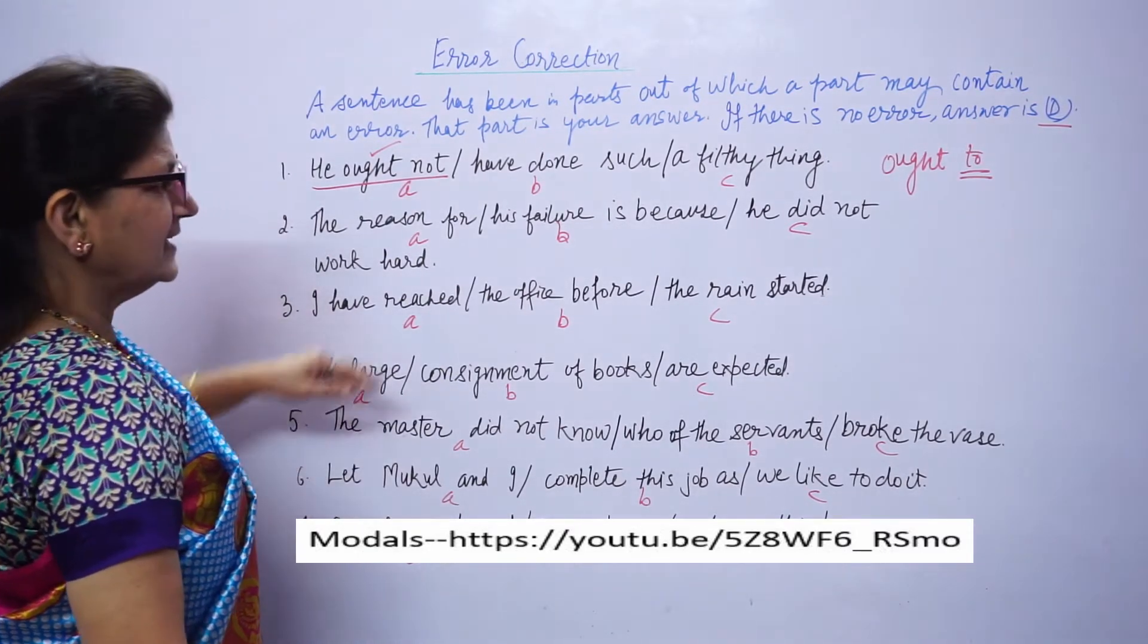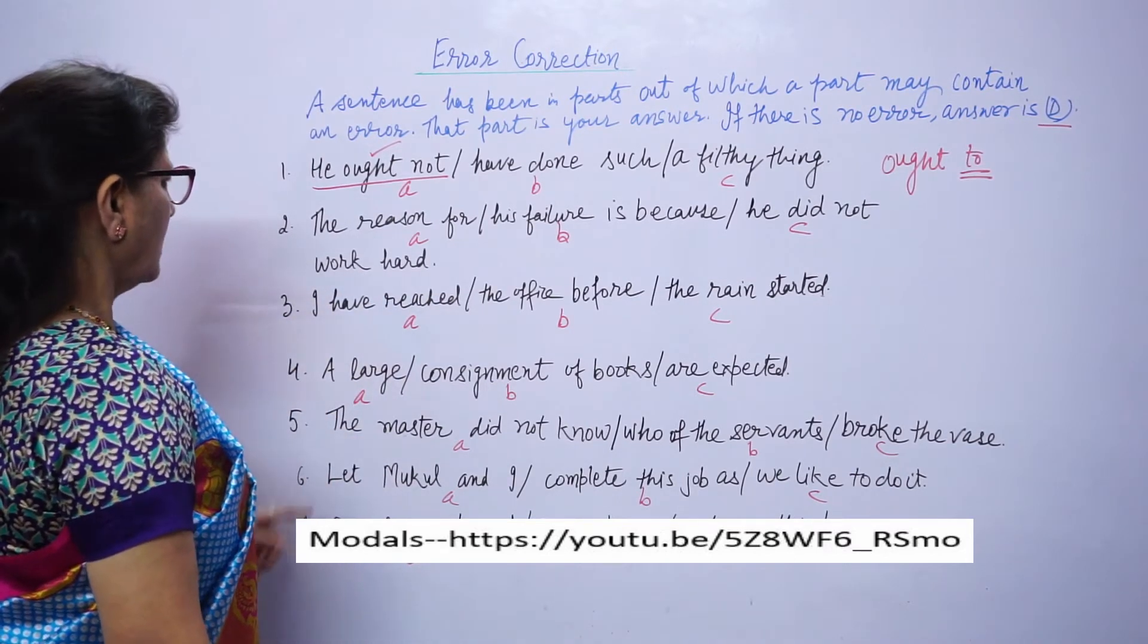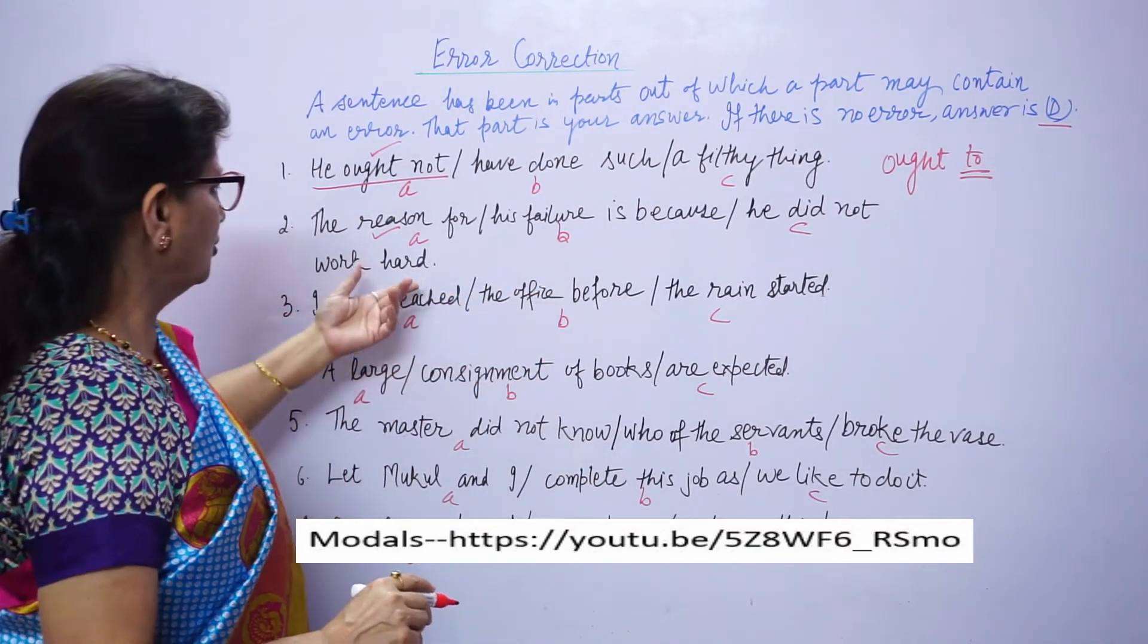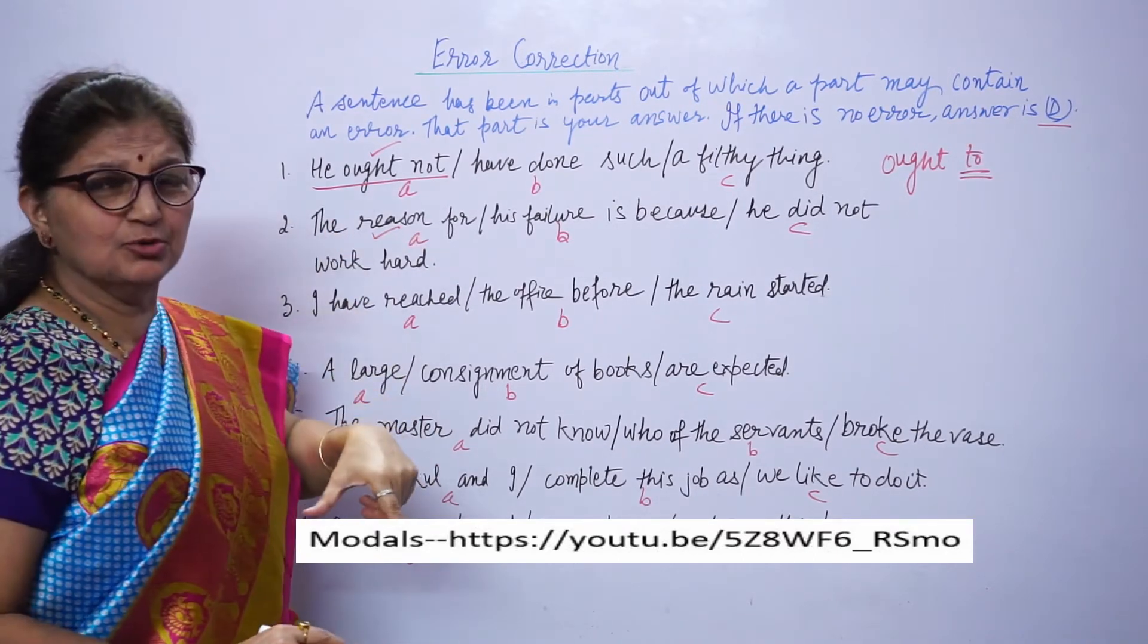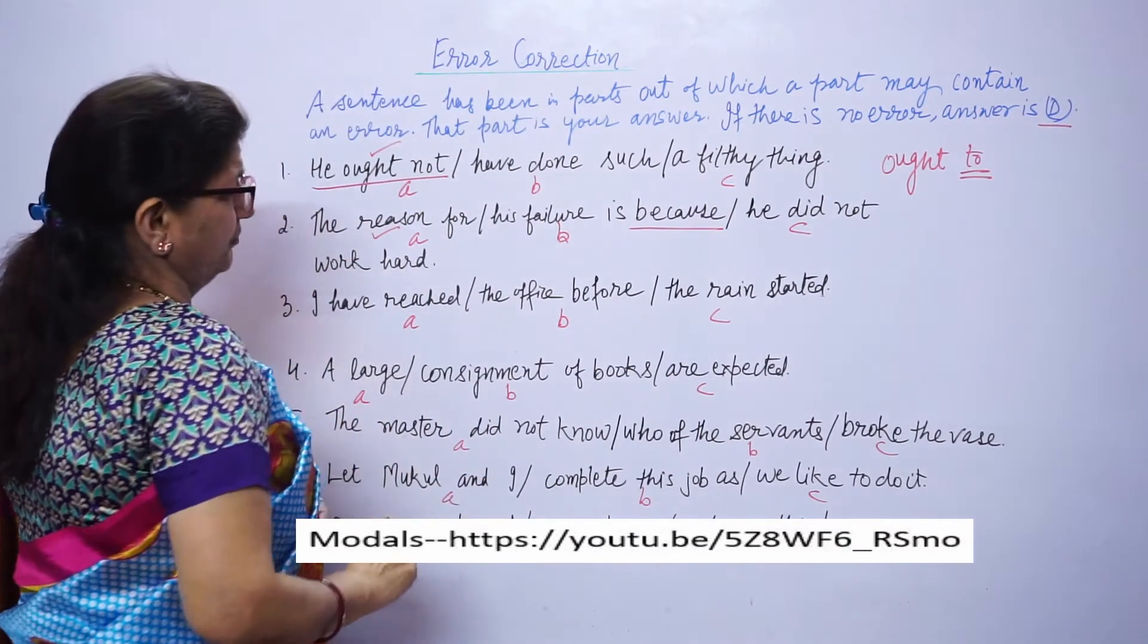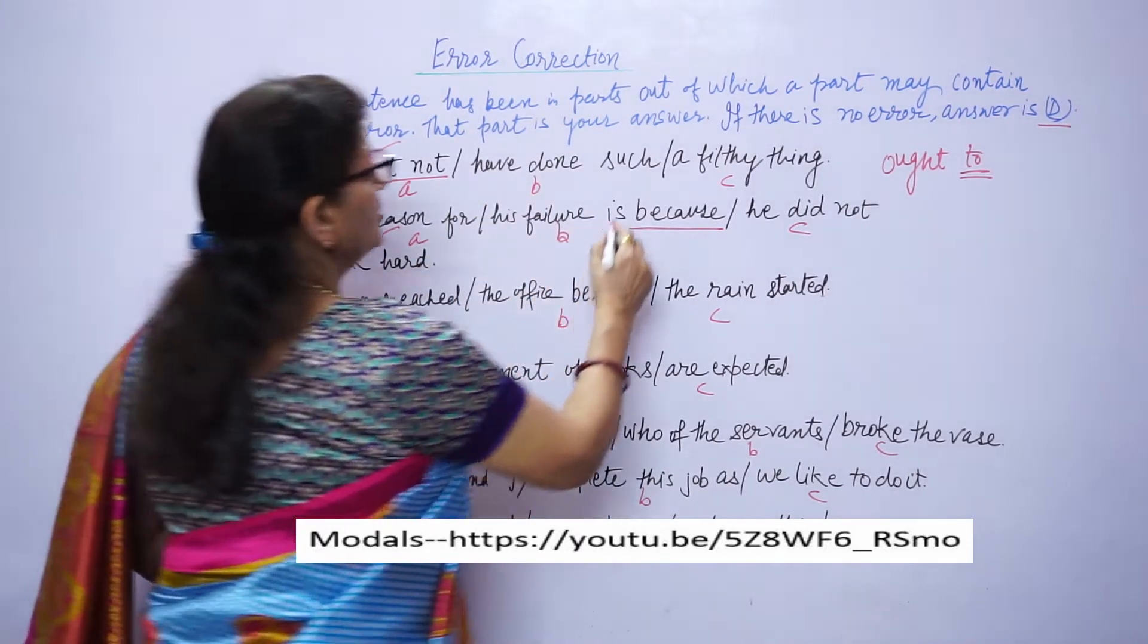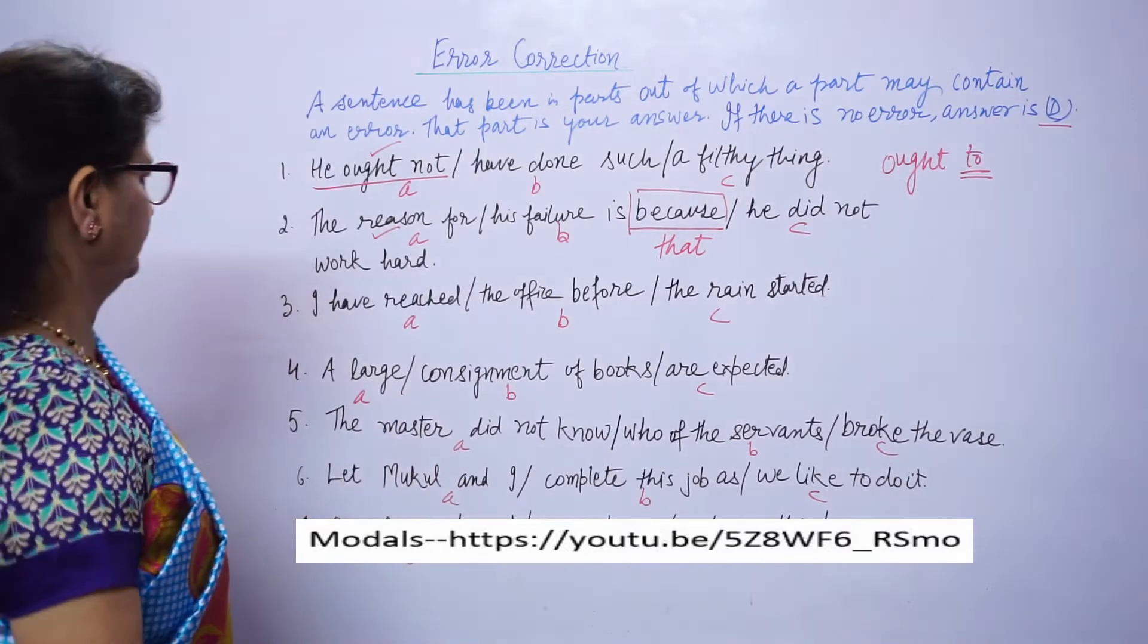The reason for his failure is because he did not work hard. When you have already used the word reason, there is no need to use because. The sentence should be the reason for his failure is that. Because must be replaced by that, here that should be used.